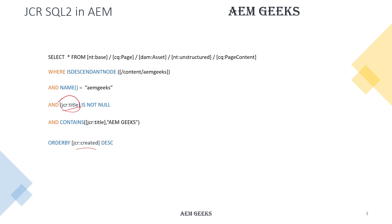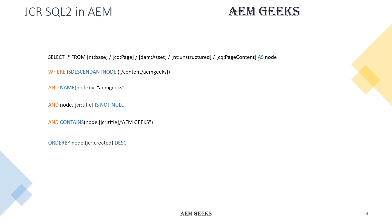To store each result, you can use AS — for example, AS node. You can give any variable name; 'node' is not mandatory, you can use xyz. You then use this alias throughout your query. Every time the search executes, each result is saved in this variable. So now you can see jcr:title coming from this node explicitly, rather than it happening in memory as in the previous approach.